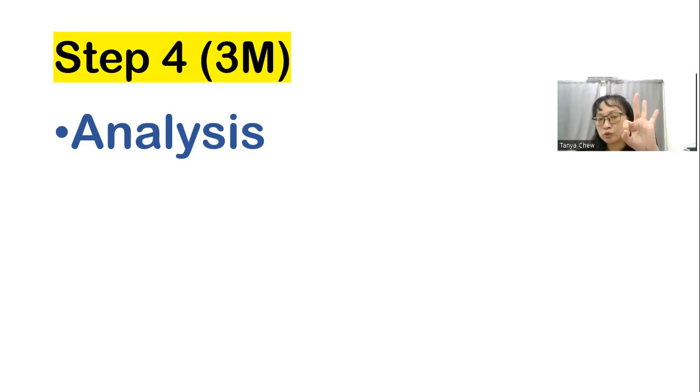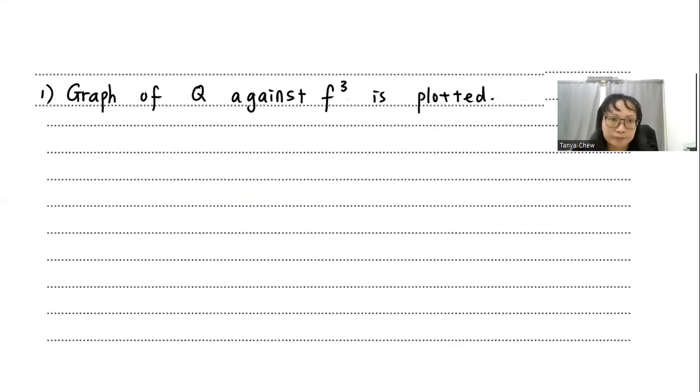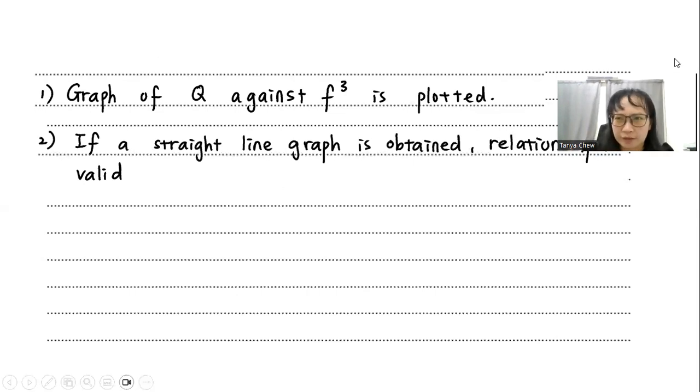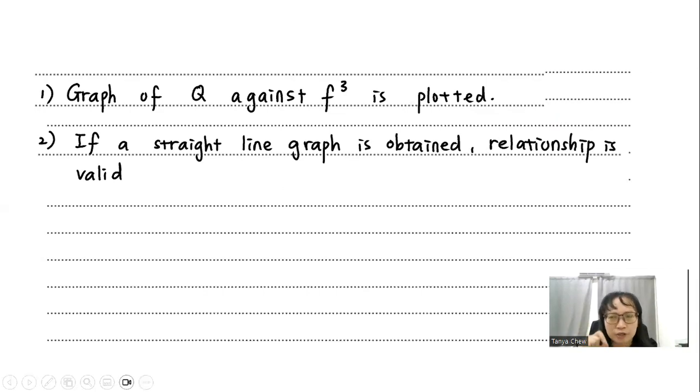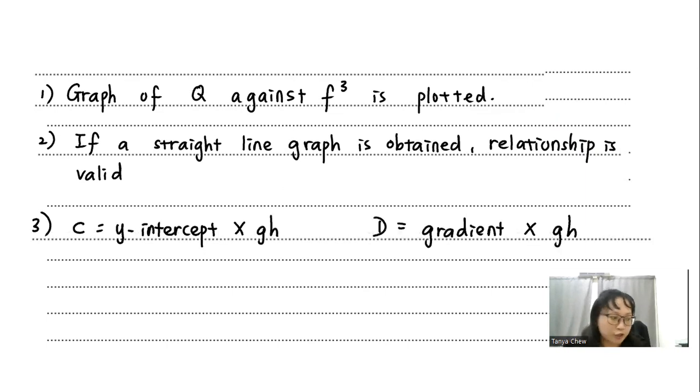So 3 marks will be given for analysis. Analysis is the easiest part to gain full marks. First, graph. What kind of graph that you want to plot? Based on the relationship, I want to plot the graph of Q against FQ. It's plotted. And it is most of the time a straight line graph. And if a straight line graph is obtained, but I cannot start my graph from origin because there is Y intercept. So I just say that if a straight line graph is obtained, the relationship is valid. And remember, the question asks us to use our results to determine the values for C and D. So C can be calculated from, you have to modify the equation. So C can be calculated from Y intercept times GH. Whereas D can be calculated by gradient times GH.